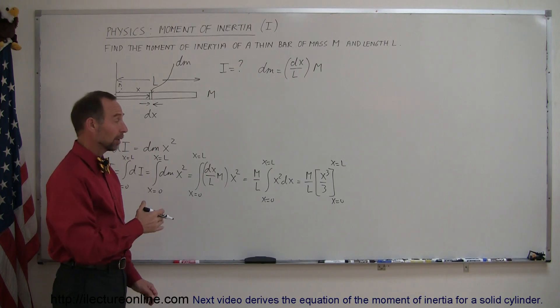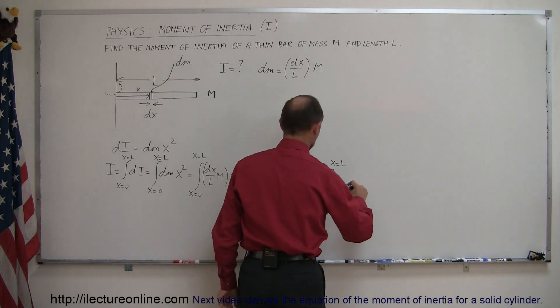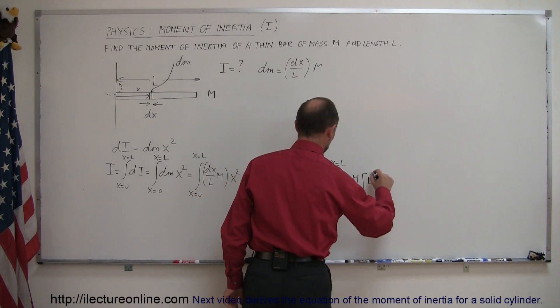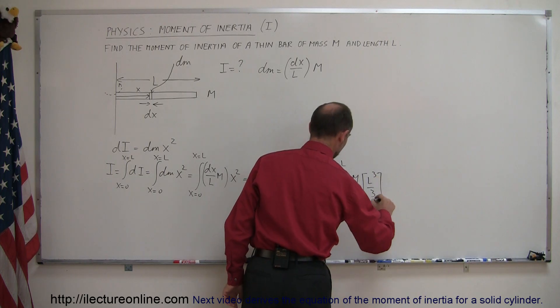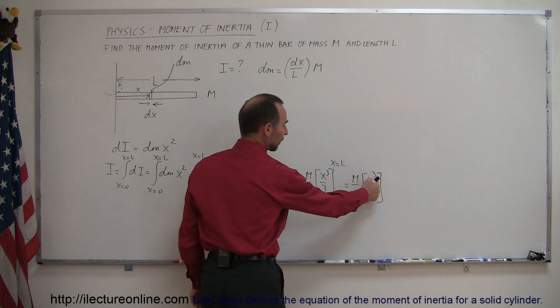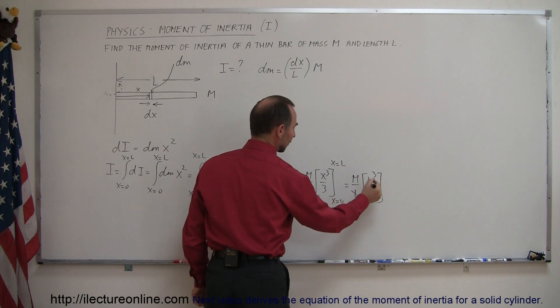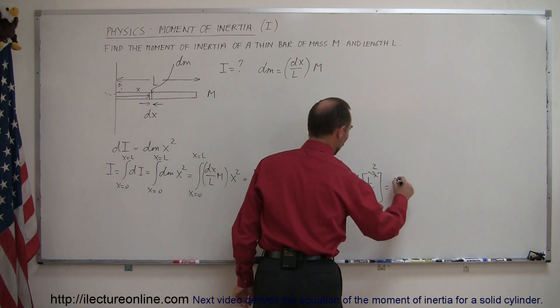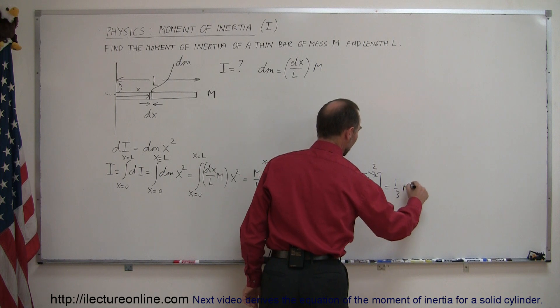Of course, when we plug in the lower limit, we get 0, so we can ignore that. But when we plug in the upper limit, we get this is equal to m over l times l cubed over 3. And then, of course, we see an l cubed over here, we see an l down here. So, this l cancels out one of those, that becomes l squared. And we now have one-third m l squared.